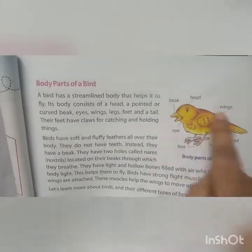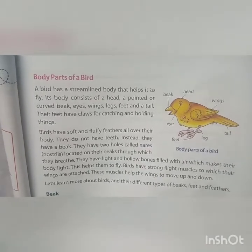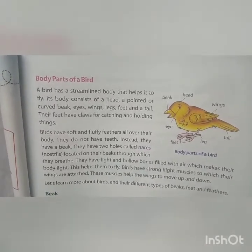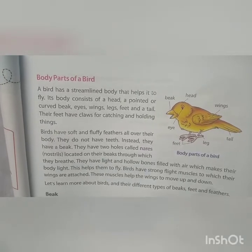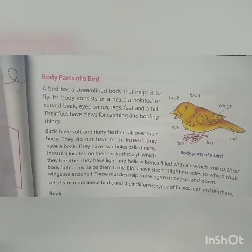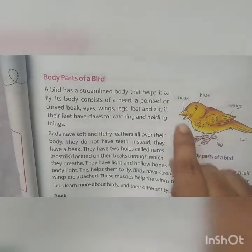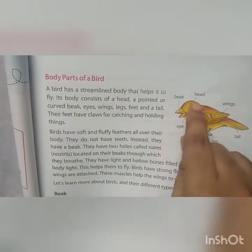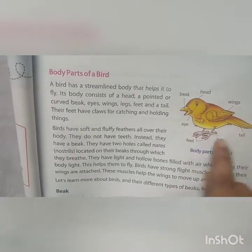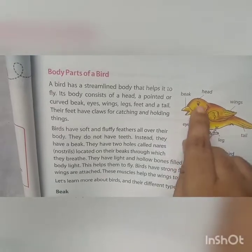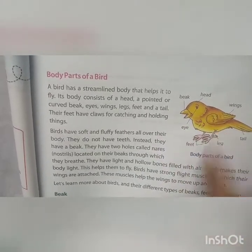You can see that the body parts have been labeled. So you have a bird — bird's beak is there, head, wings, eyes, feet, leg, tail. So you can see the beak, head, wings, tail, eyes, feet and leg.